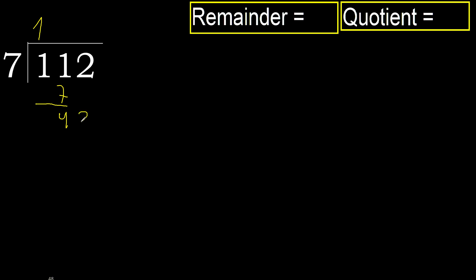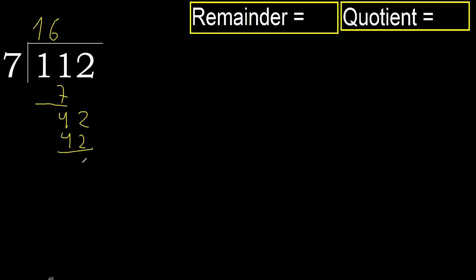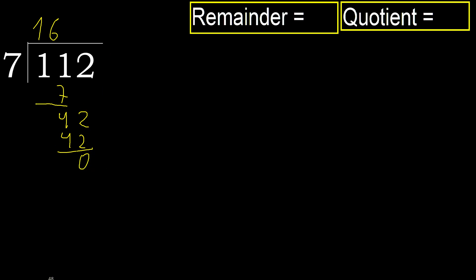Next. 42. 7 multiplied by 6 is 42. 42 is not greater, so subtract. 0. Next, there is no number, therefore finish it.